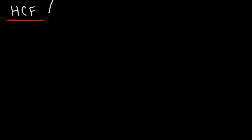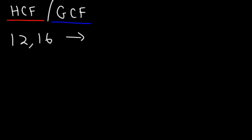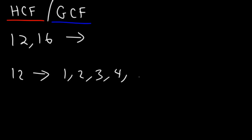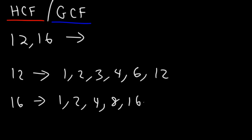Now the next thing we're going to talk about is how to find the HCF. The HCF stands for the highest common factor — this is the same as the GCF, the greatest common factor. Let's use 12 and 16. Factors of 12 are 1, 2, 3, 4, 6, and 12. Factors of 16 are 1, 2, 4, 8, and 16. The highest factor found in both lists is 4. So the HCF of 12 and 16 is 4.